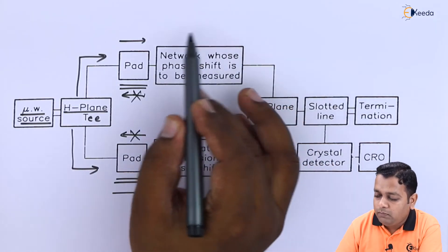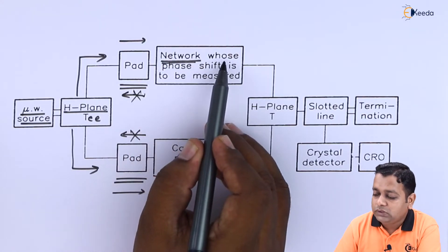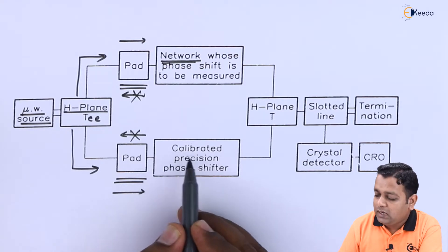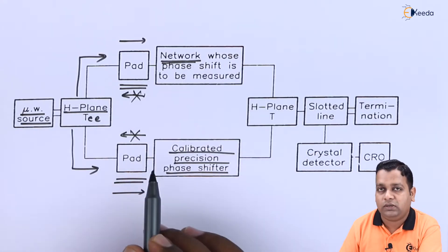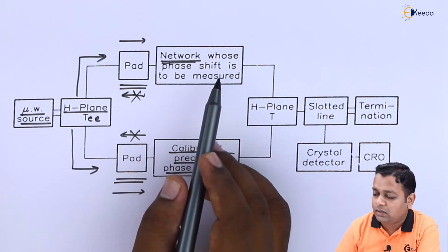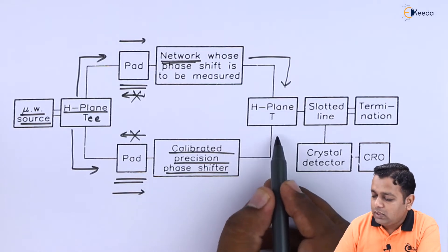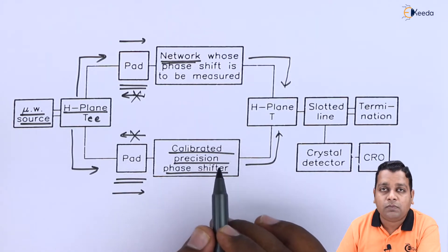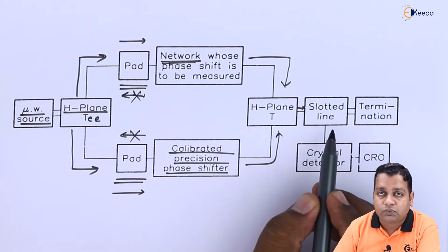For the upper branch, the connection is made with the network or device under test (DUT) whose phase shift is to be measured. For comparison, the lower branch uses a calibrated precision-type phase shifter at the same position. After passing through the DUT, the output signal is fed to one collinear arm of the H-plane T, while the signal from the precision calibrated phase shifter is fed to the other collinear arm. The two signals are added and the summation is fed as input to the slotted line.